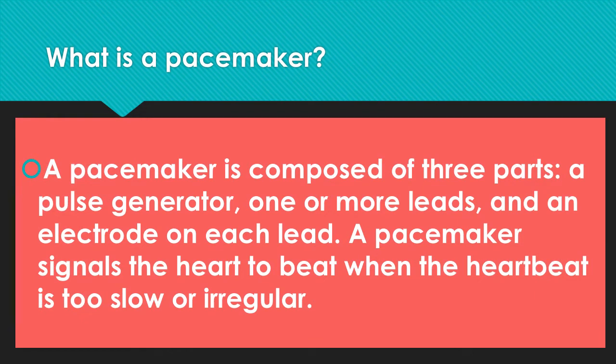The pacemaker is composed of three parts: the pulse generator, one or more leads, and an electrode on each lead. A pacemaker signals the heart to beat when the heart is too slow or irregular. Whenever the patient's heartbeat goes low, the pacemaker automatically starts working to regulate the heartbeat.